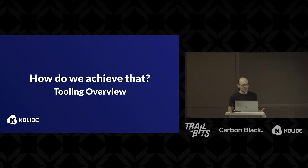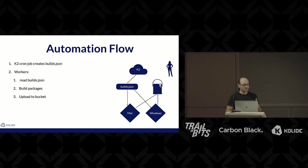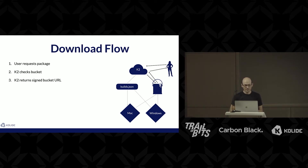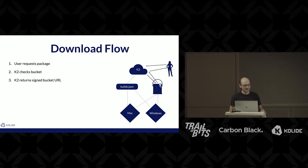So how do we achieve that? We have an automation flow. K2 is our SaaS — it has a cron job, it exports build files, and then we have various build workers that read the builds file, build the packages, and shove them into a bucket. The download flow is here mostly to make the person contextualized: the user says, hey SaaS, give me a package. It checks the bucket, generates a signed URL, returns it. Pretty straightforward.